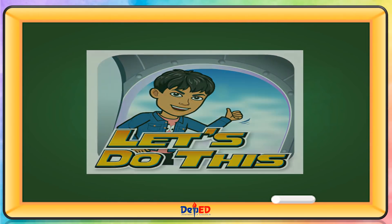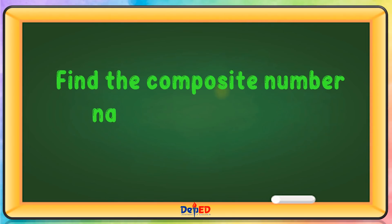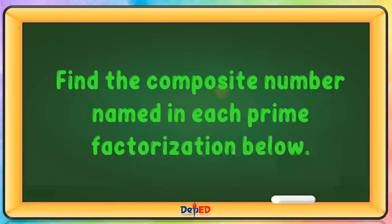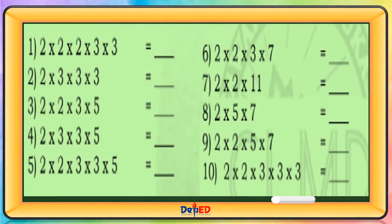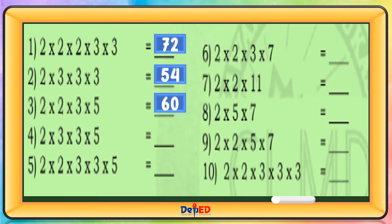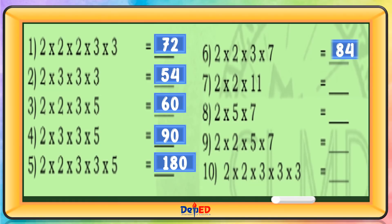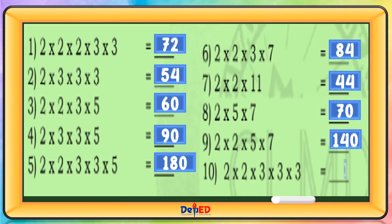Let's do this. Find the composite number in each prime factorization below. 1 is 72. 2 is 54. 3 is 60. 4 is 90. 5 is 180. 6 is 84. 7 is 44. 8 is 70. 9 is 140. 10 is 108.